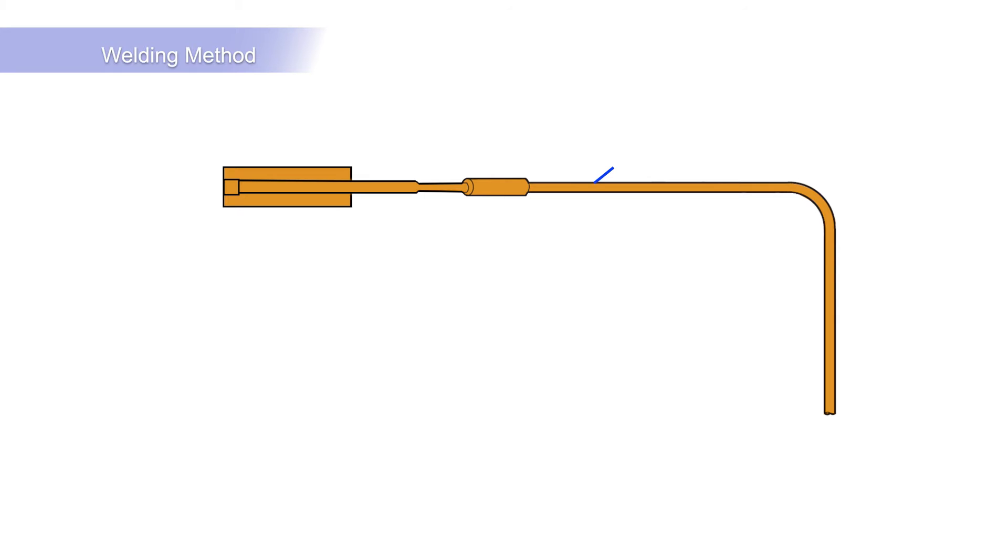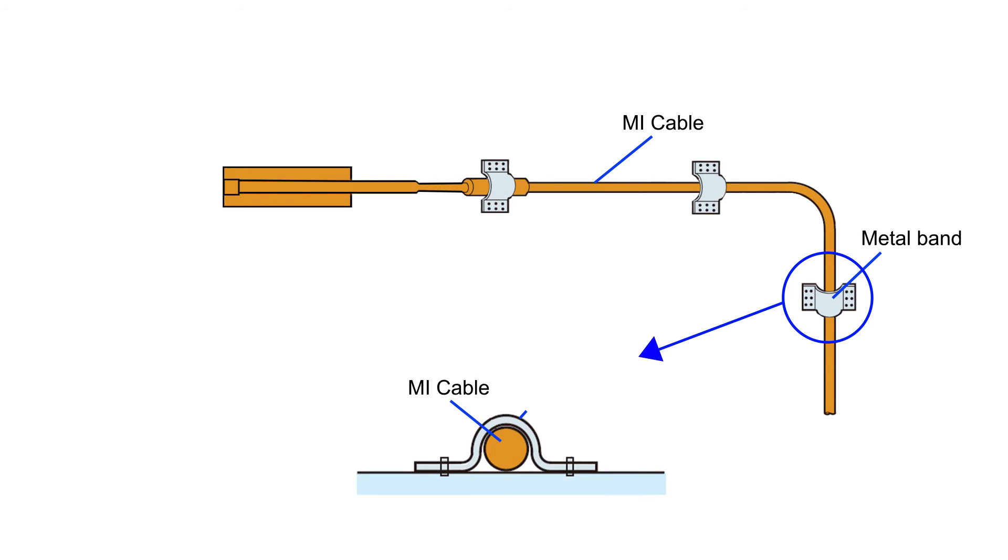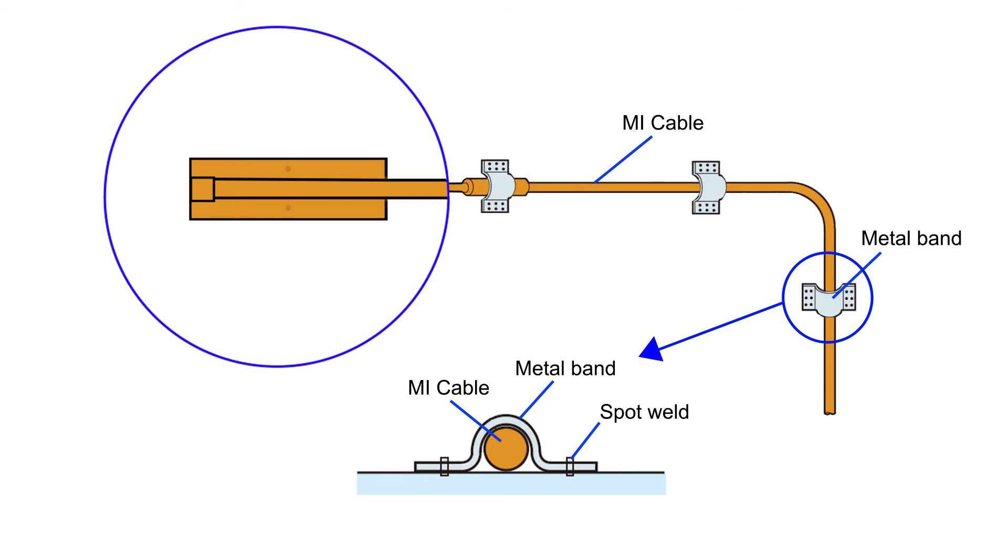The gauge and MI cable are mounted using a spot welding technique. Initially, the MI cable is secured with spot welding metal bands to stop the measurement point being affected by tension or twisting. The gauge is mounted with the welding done in a certain order to avoid issues and instability. Start at the center and work toward the cable, then finish with the outer end.